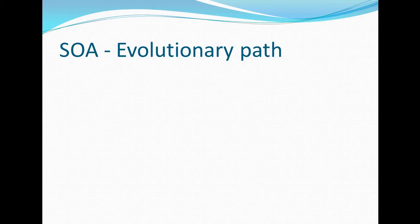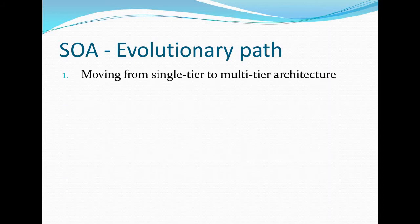There are different architectural styles. Software engineering is one architectural style, then Object Oriented Analysis and Design is another, and now we are studying the new architectural style: Service Oriented Architecture. In terms of evolution, we are moving from single-tier architecture to multi-tier architecture. In the initial days, organizations used mainframe computers.